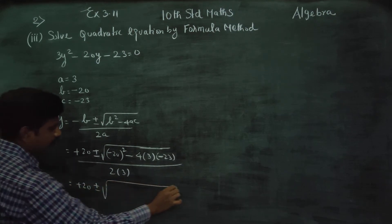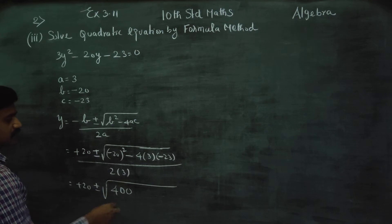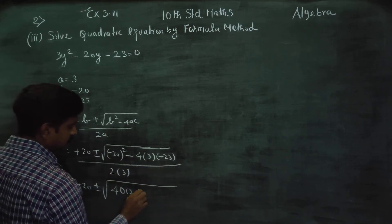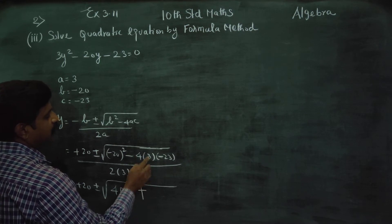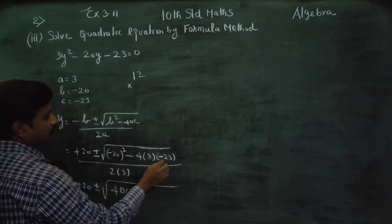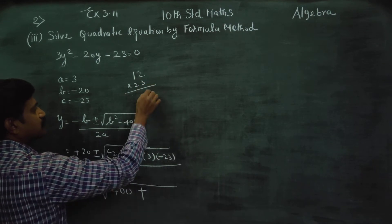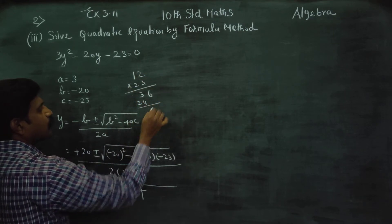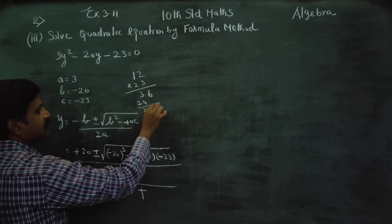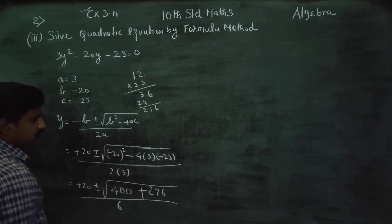Computing 4 times A times C: 4 into 3 into 23 gives 12 into 23. Calculating: 3 twos are 6, 3 ones are 3, giving us 276. So we have 20 plus or minus square root of 400 plus 276, all divided by 6.